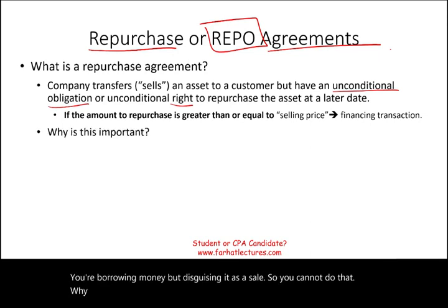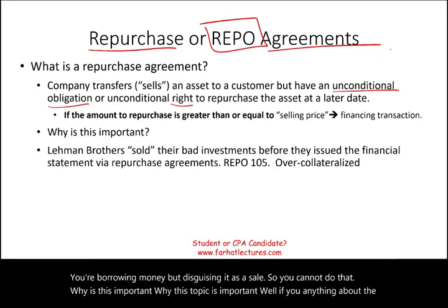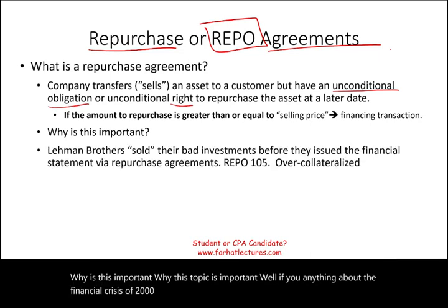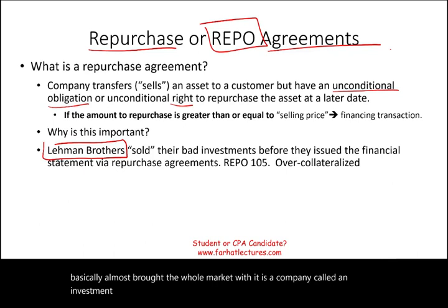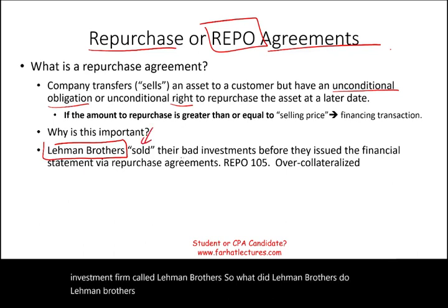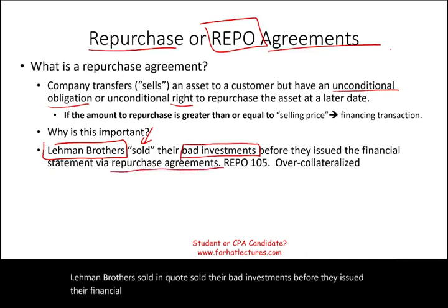Why is this topic important? If you know anything about the financial crisis of 2007–2008, one of the companies that went bankrupt and almost brought the whole market with it is an investment firm called Lehman Brothers. So what did Lehman Brothers do? Lehman Brothers sold — in quotes — their bad investments before they issued their financial statements through a repo agreement.